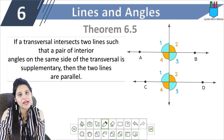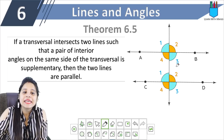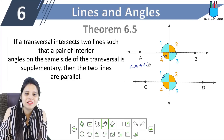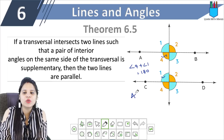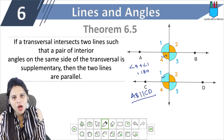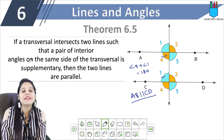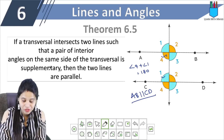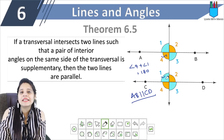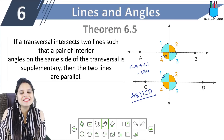Theorem 6.5 is the converse of Theorem 6.4. If you are given that angle 4 and angle 1 are supplementary — that is, angle 4 plus angle 1 equals 180 degrees — then you can say that AB is parallel to CD. If a transversal intersects two lines such that a pair of interior angles on the same side of the transversal is supplementary, then the two lines are parallel.